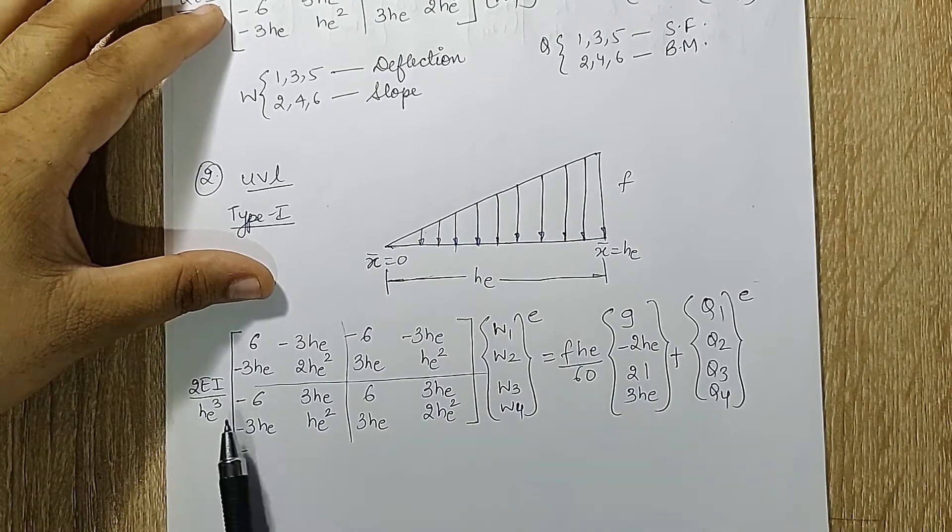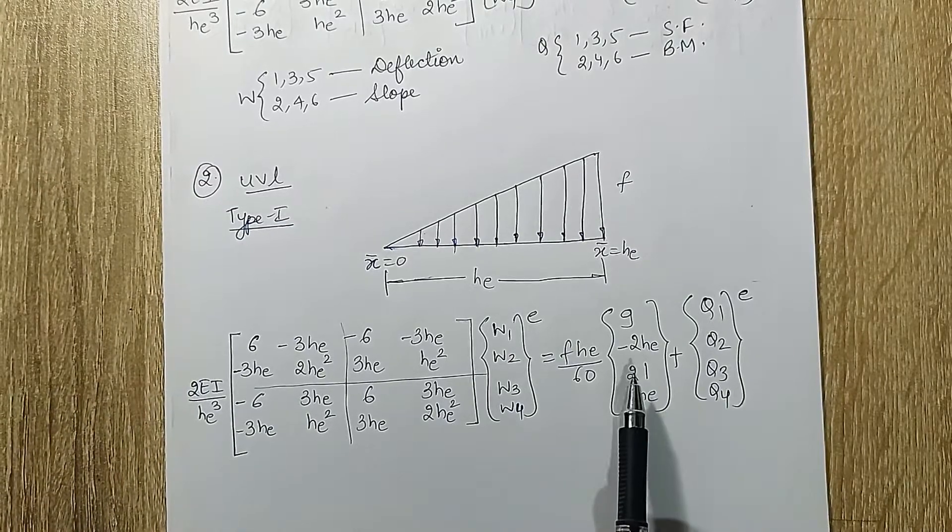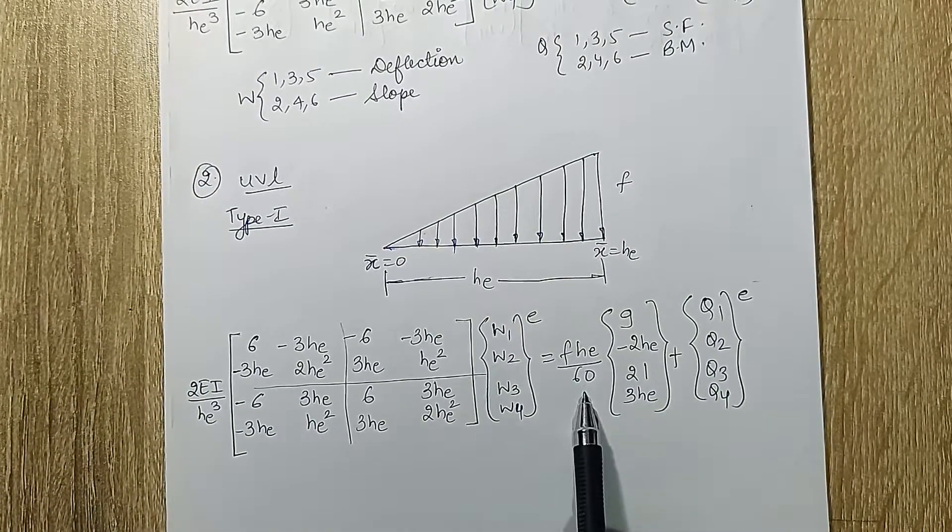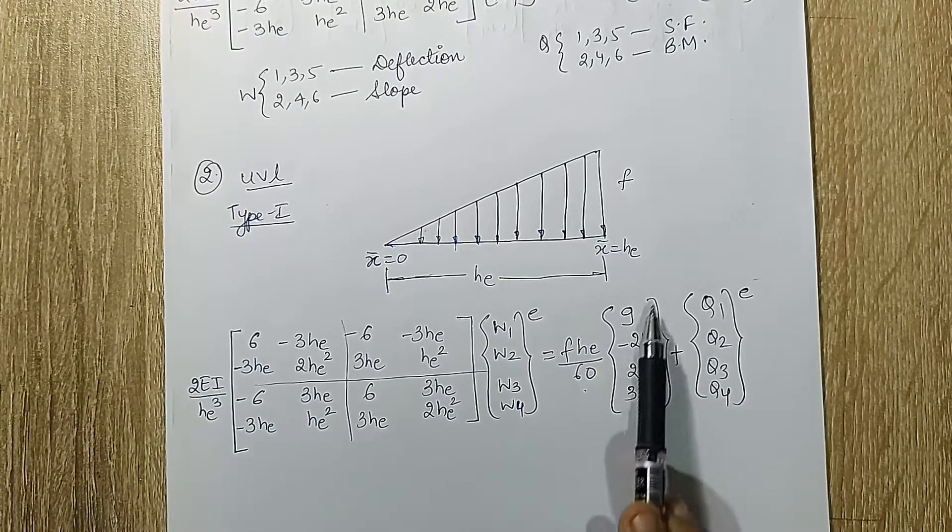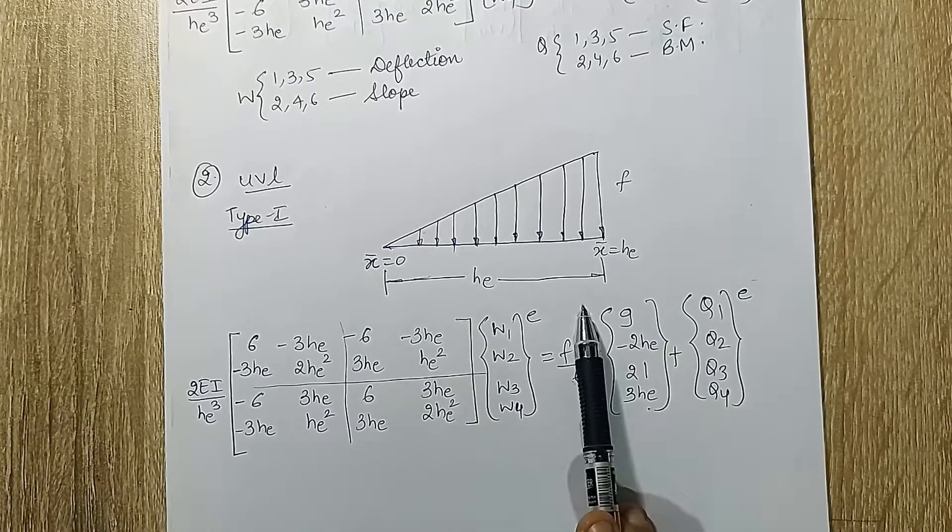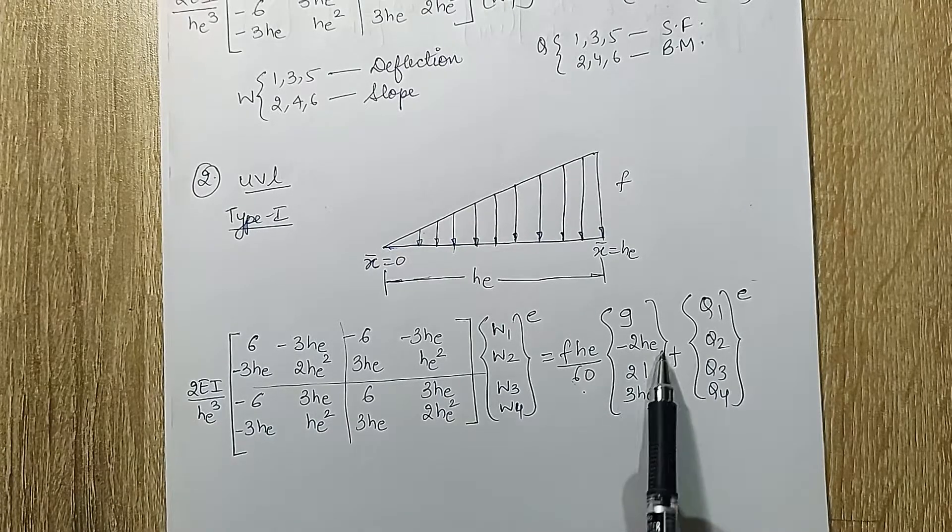Now if you compare this with the UDL EME, this much portion remains the same. The left hand side on the right hand side for UDL here you had FHE upon 12, and here you had 6 minus HE 6 HE. Only this portion has changed for UVL. So this is something which you need to remember: this is FHE upon 60, 9 minus 2 HE, 21, 3 HE. This is your increasing type of UVL.